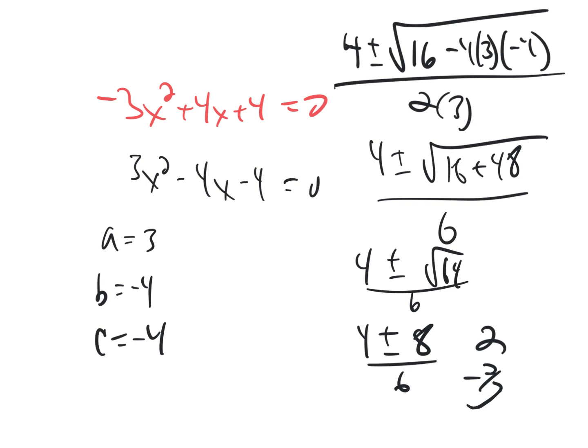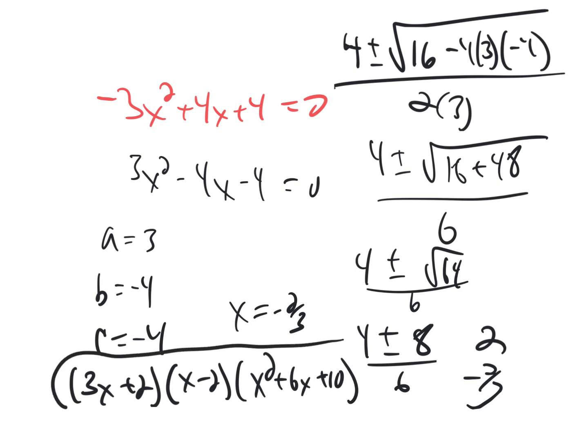So that tells me I've got these four factors. If x equals negative 2 thirds, if I multiply both sides by 3 and then add 2, I get that factor, which is 3x plus 2. And the other one is if x equals 2, so that would be x minus 2. And then I've got x squared plus 6x plus 10, which was that factor that came from the imaginary roots.